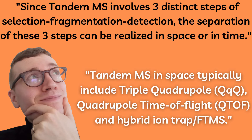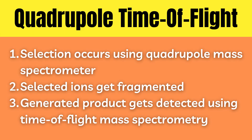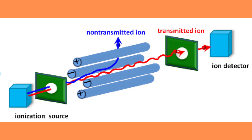We'll use quadrupole time of flight, or QTOF, as an example. In QTOF, precursor ions are selected with the help of the quadrupole mass spectrometer and sent to the collision cell for fragmentation. In other words, the first quadrupole Q1 operates as a mass filter, allowing only specific selection of ions based on their mass to charge ratio.